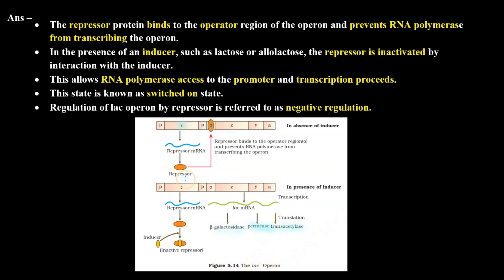In the generally switched-off condition — when E. coli is not growing in lactose medium — the regulatory i gene undergoes transcription and then translation to produce repressor protein. This repressor protein binds to the promoter region where RNA polymerase was supposed to bind. Since RNA polymerase cannot bind to that site, transcription of the structural genes does not occur, meaning the lac operon is in a switched-off condition.